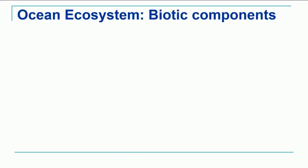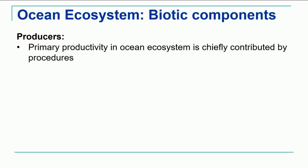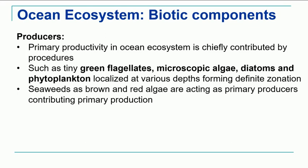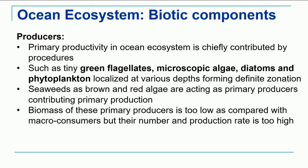Now let's see the biotic components of this oceanic ecosystem. The first are the producers. Primary productivity of the ocean ecosystem is chiefly controlled by these producers, which include smaller plants like green flagellates, microscopic algae, diatoms, and other major phytoplanktons present in the different zones of the sea. Seaweeds like brown and red algae are also important primary producers as they can produce their own food by trapping sunlight. The biomass of these primary producers is low compared to the macro consumers.